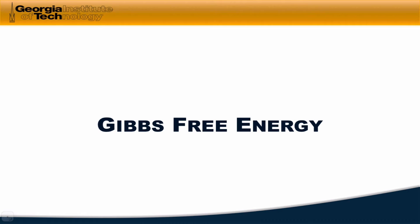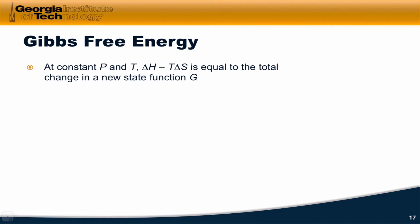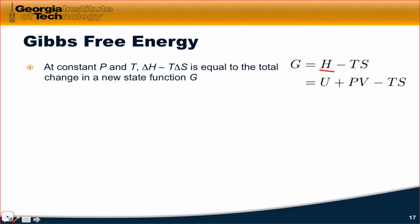We've reformulated the second law in terms of a chemical reaction system only, and what has emerged is a new state function known as Gibbs free energy. At constant pressure and temperature, delta H minus T delta S is equal to the total change in this new state function G, the Gibbs free energy. G itself is defined as H minus TS, and if we expand enthalpy as U plus PV, we get that G equals internal energy plus pressure times volume minus temperature times entropy.